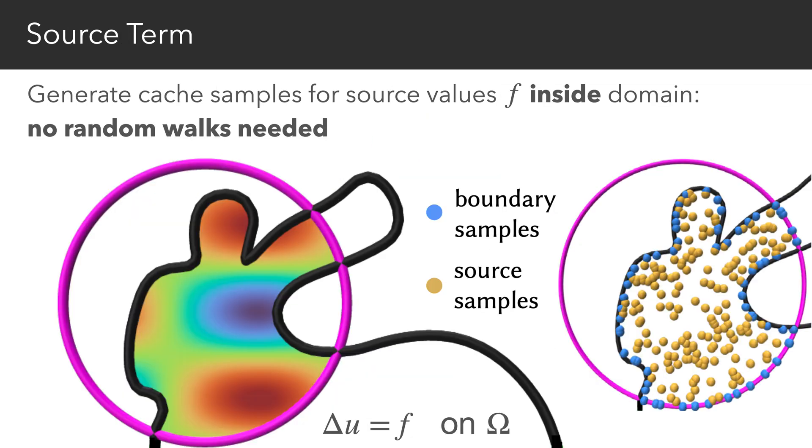Our method can additionally handle Poisson equations, which have an added source term. In this case, we generate an additional set of sample points that are inside the domain, and can directly evaluate the source term in each of these points without any need for additional random walks.